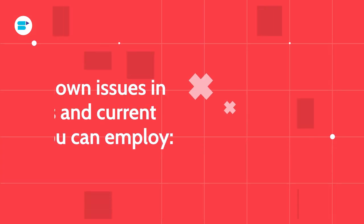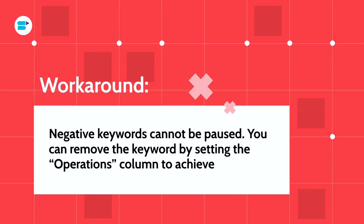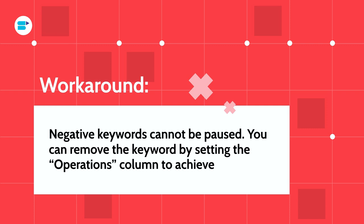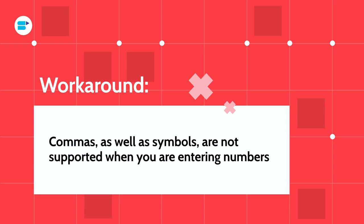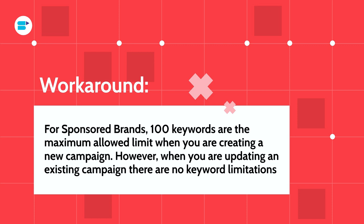Here are four known issues in bulk operations and current workarounds. First, negative keywords cannot be paused — you can remove keywords by setting the operation column to archive. Second, commas and symbols are not supported when entering numbers. Third, for sponsored brands, 100 keywords is the maximum allowed limit when creating a new campaign; however, when updating an existing campaign there are no keyword limitations, so you can work around this by using two bulk sheets. Keep these points in mind when working on Amazon bulk sheets version 2.0.